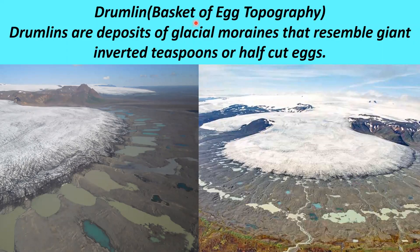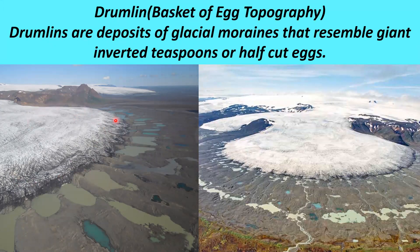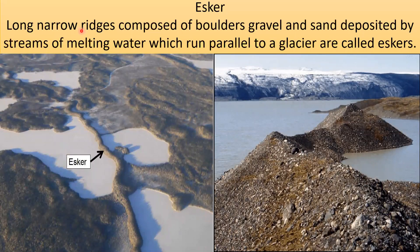Drumlin — meaning 'basket of egg topography' — drumlins are deposits of glacial moraines in a massive structure. They resemble giant inverted teaspoons or half-cut eggs. Eskers are long, narrow ridges composed of boulders and sand deposited by streams of melting water, running parallel to the glacier ice. When glaciers melt, the water flows and deposits gravel and boulders, forming these ridges called eskers.